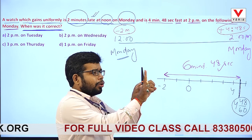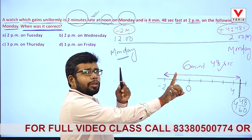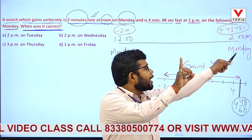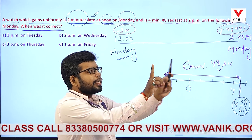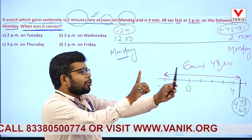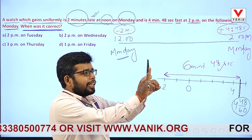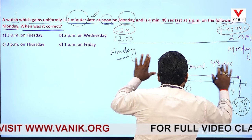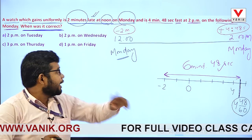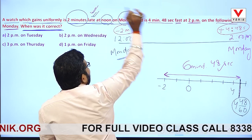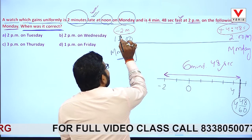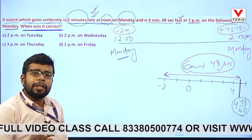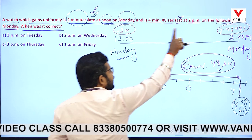Think of it like two people running. One runs at a certain speed and the other was behind — 2 meters behind on Monday at 12. By the next Monday at 2 PM, the second person has crossed and gone ahead. I need to find the exact moment when the second person crossed — that is when the watch showed the correct time.